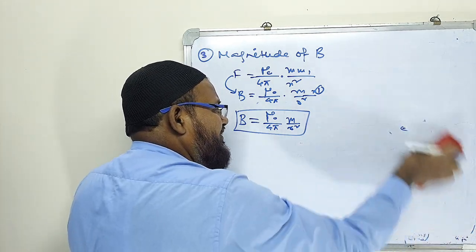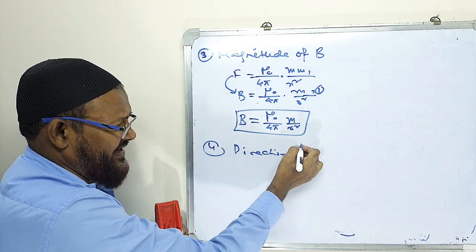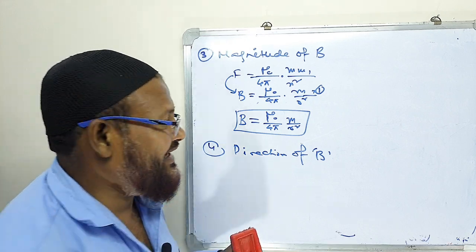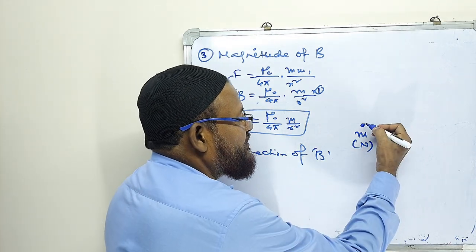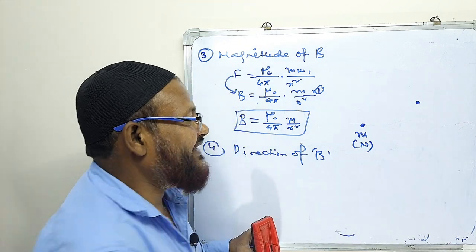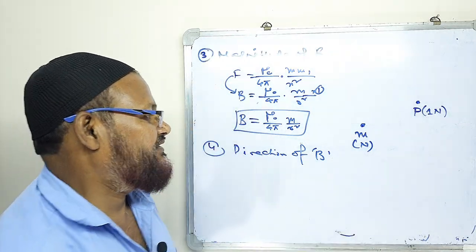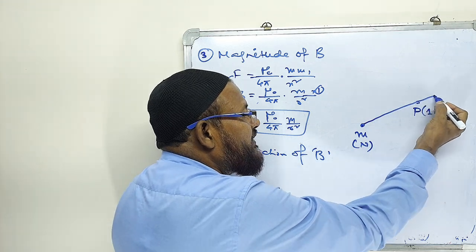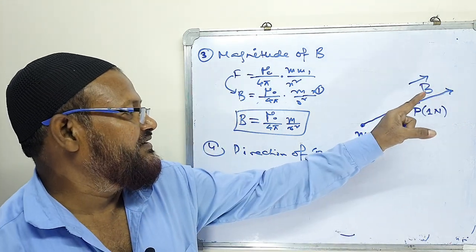The fourth point is direction of B. Here is a pole strength — suppose this is the north pole. Around this pole throughout three-dimensional space there is a magnetic field. We place a unit north pole at a point on the sphere. This north pole will repel, and the direction of that repulsion is the direction of B.